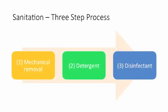Sanitation and cleaning is a three-step process, as mentioned in a couple of different lectures this weekend. Step one is mechanical removal of organic debris, followed by cleaning with a detergent, and then cleaning with a disinfectant. All three steps are necessary for the cleaning process to be effective and to truly reduce the pathogen load in the environment.